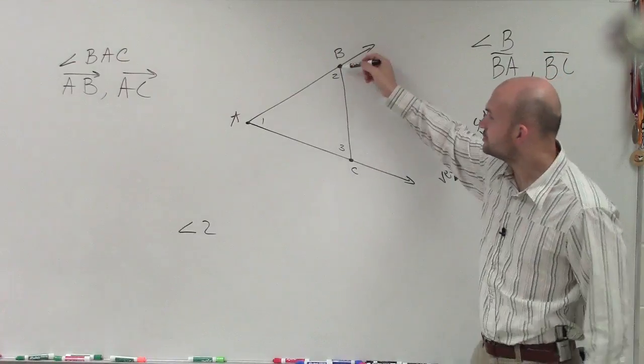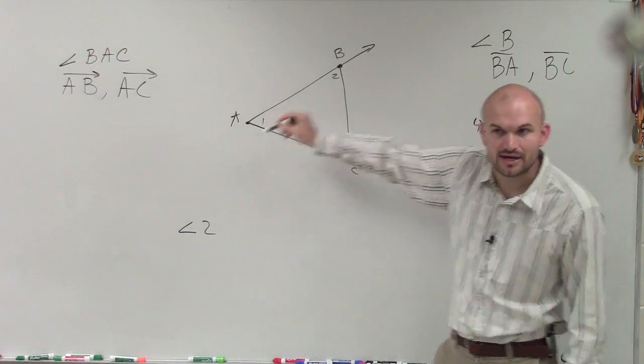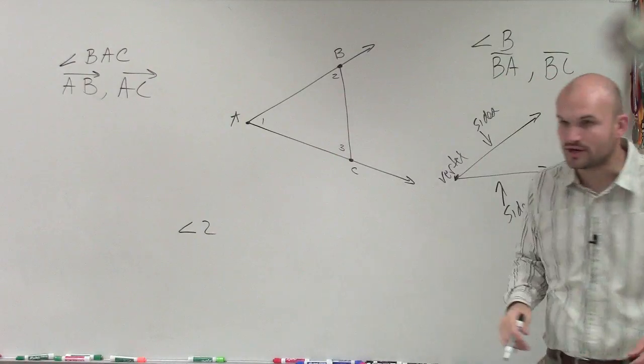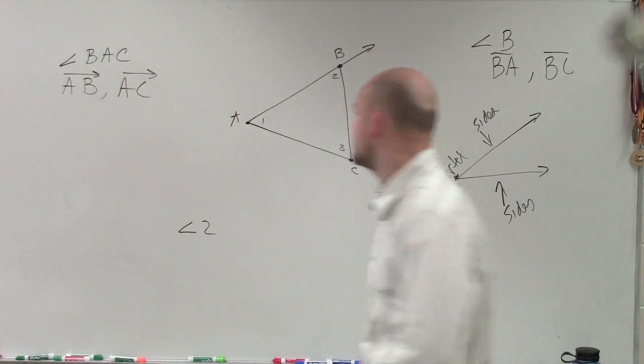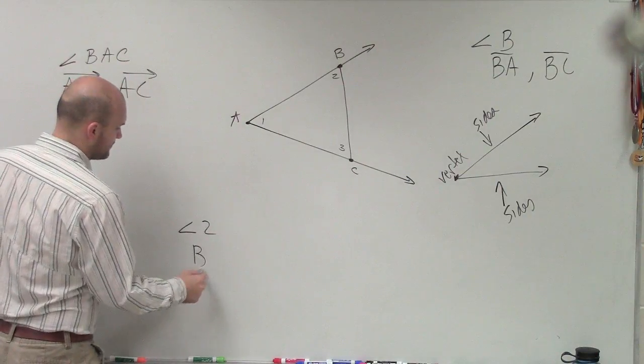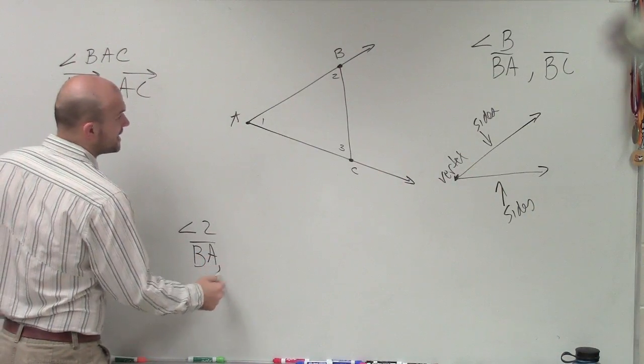But ladies and gentlemen, these two lines stop, right? They stop. These are the two lines that make that up. So therefore, they are what we call line segments. And angle two, I don't know why I did the same one again. But yeah, this is BA and BC.